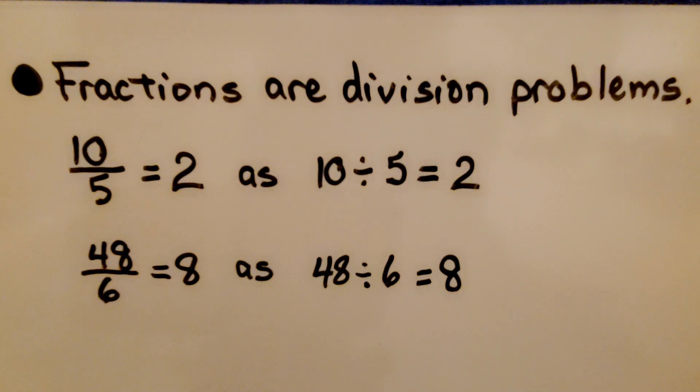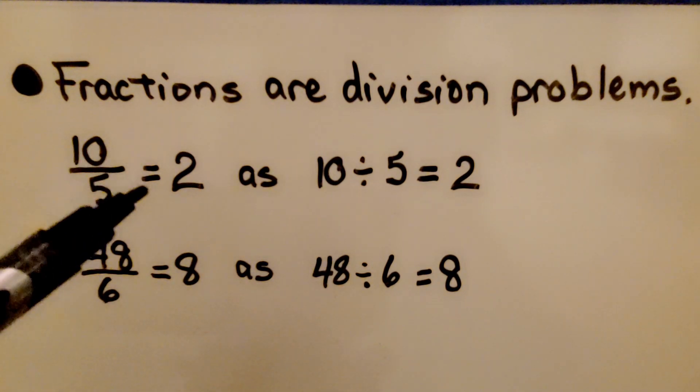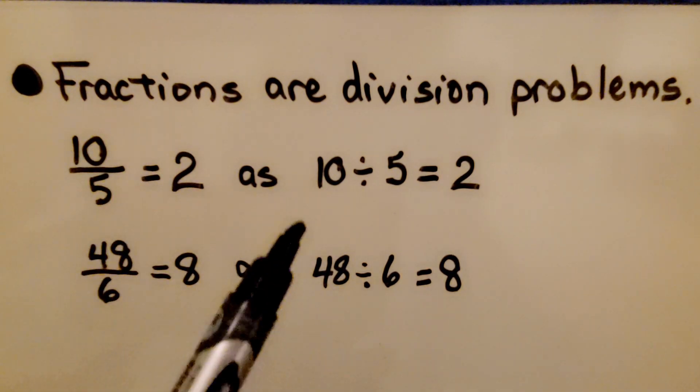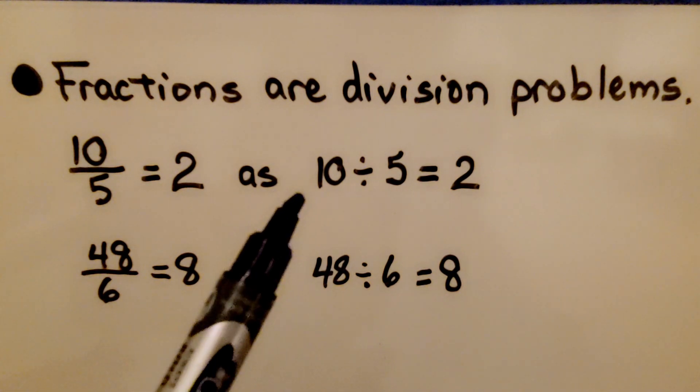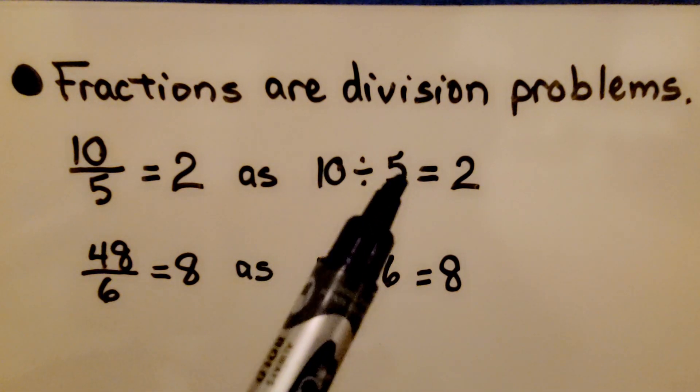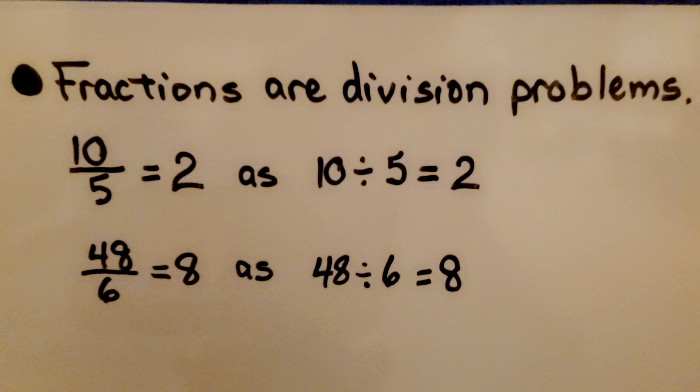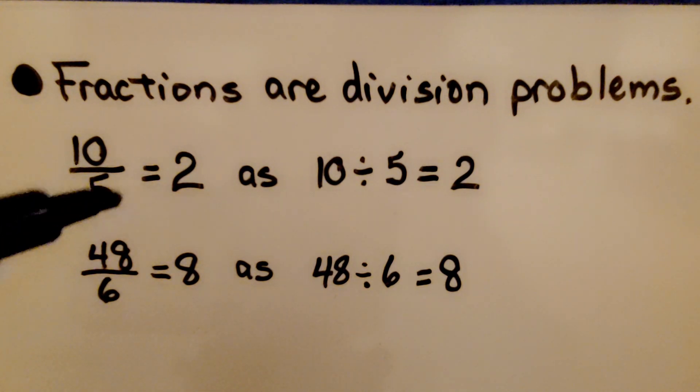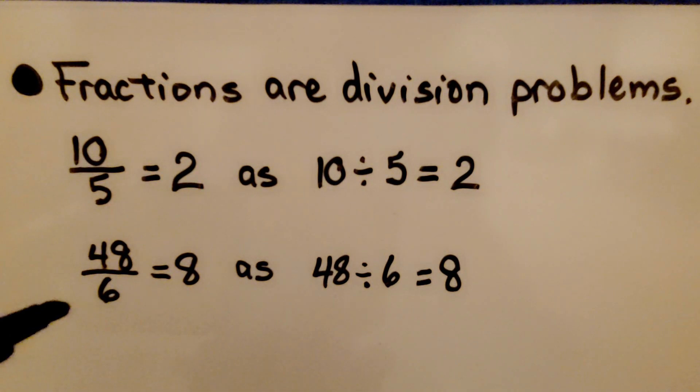When we simplify fractions, we're actually doing division. Fractions are division problems. If we have 10 fifths, it's equal to 2. We can look at it as a division problem of 10 divided by 5 is equal to 2. 48 sixths is equal to 8, as 48 divided by 6 is equal to 8.